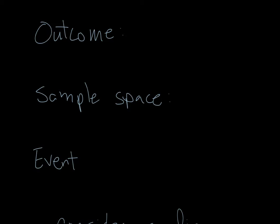Let's talk about some important vocabulary with probability. We have the terms outcome, sample space, and event. The outcome is any result of a trial. It could be something that happens when we roll a dice, or when we flip a coin, when we pick lottery numbers.